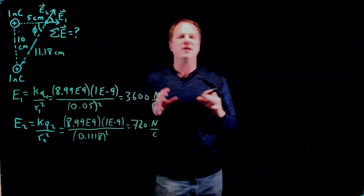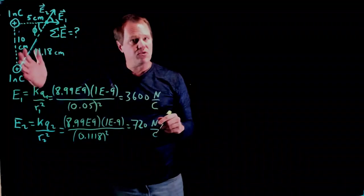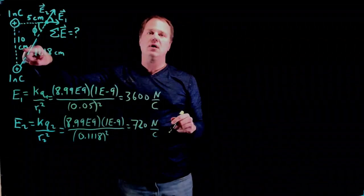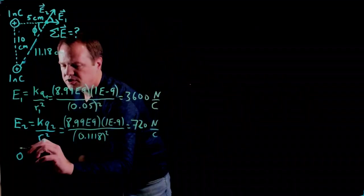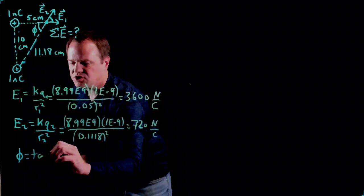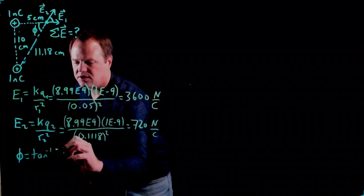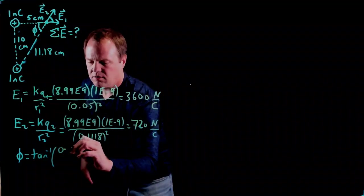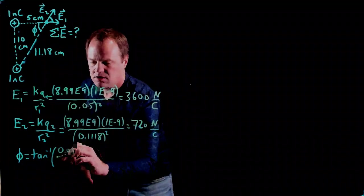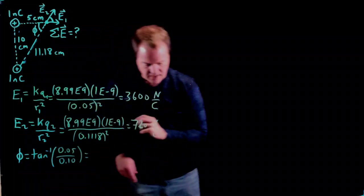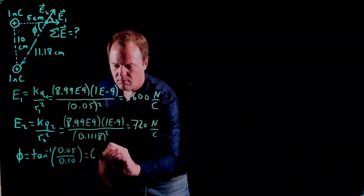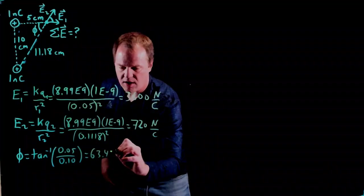So what is the angle? Well we've got a right triangle here, so I can use trigonometry to determine phi. And so phi will just be the inverse tangent of the adjacent over the opposite. So adjacent of 5, I'll go ahead and convert to SI, .05 and .10, and I get an answer of 63.43 degrees.